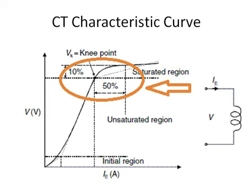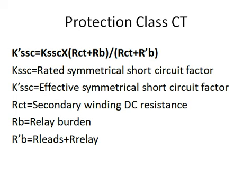This is IEC 60044, which defines the CT dimensioning and CT sizing criteria. As you can see from this formula: K_SSC_dash equals K_SSC multiplied by (Rct plus Rb) divided by (Rct plus Rb_dash), where K_SSC_dash is the effective symmetrical short-circuit factor.